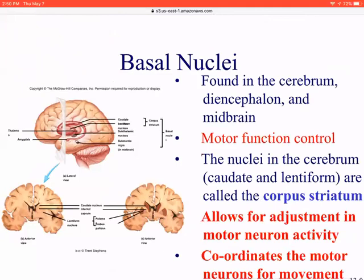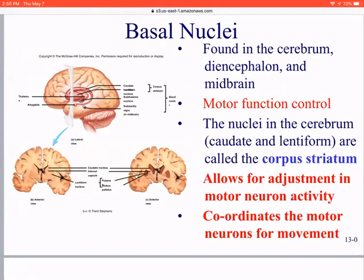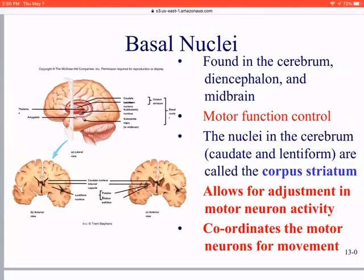The basal nuclei — sometimes called basal ganglia — are a series of connections between areas deep in the temporal and frontal lobe regions, including the caudate nucleus and internal capsule, that allow for adjustments in neuron activity, specifically motor neurons, so you can plan and coordinate motor neurons for movement.